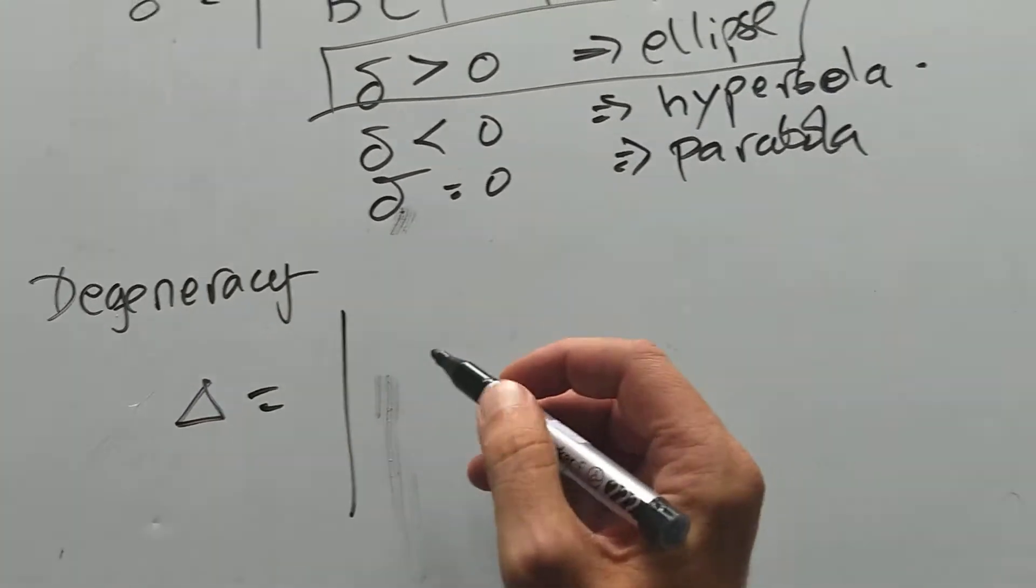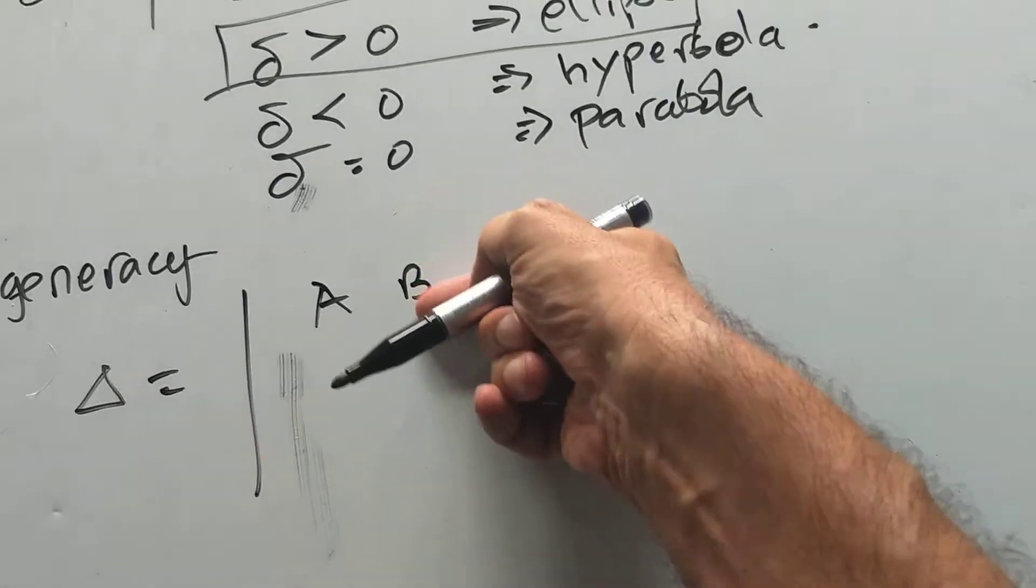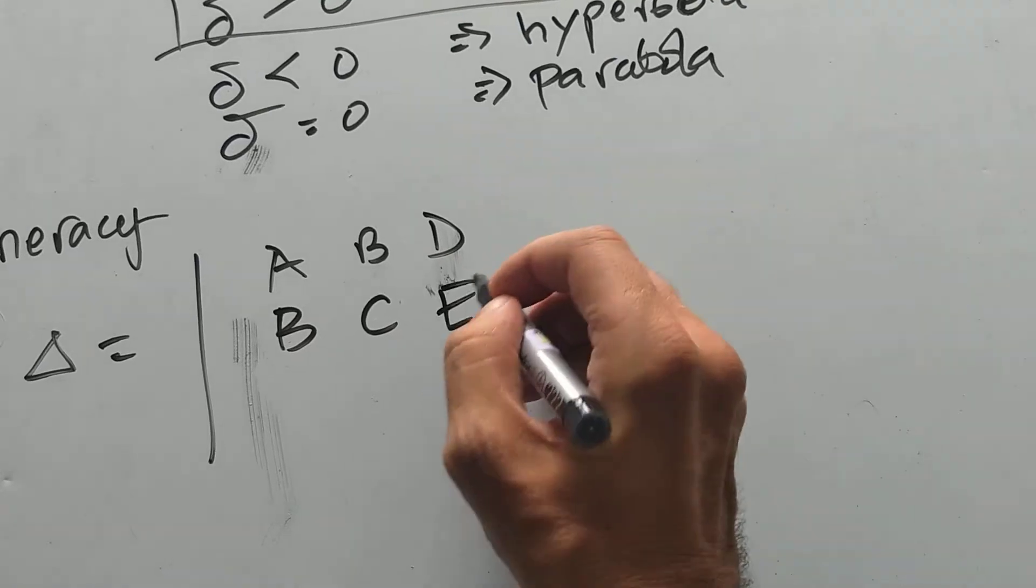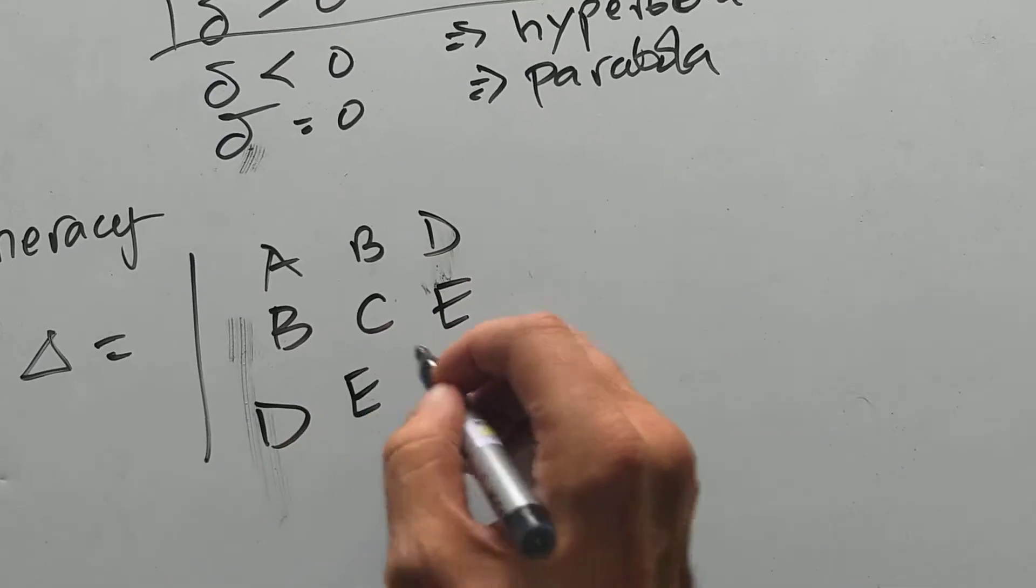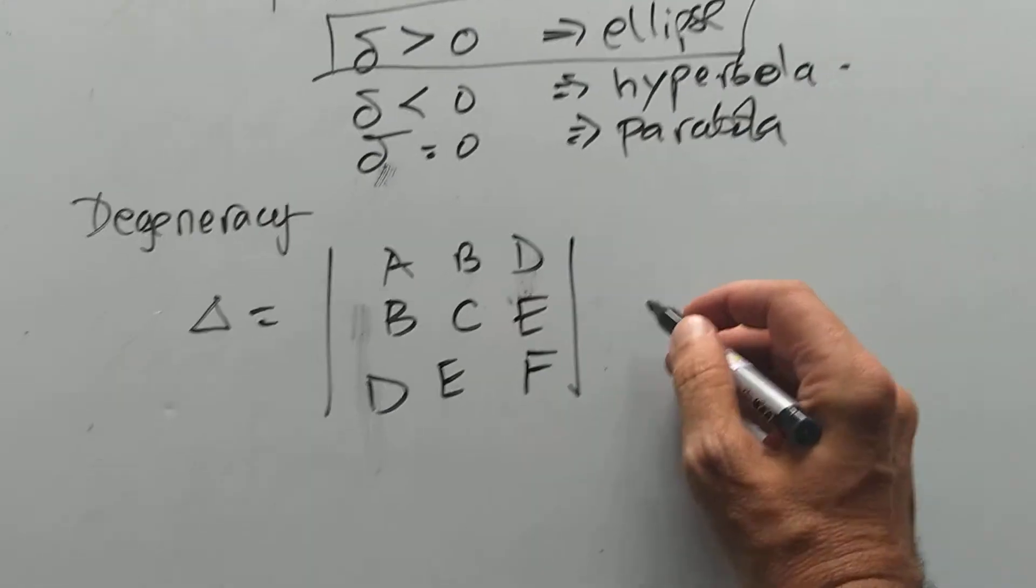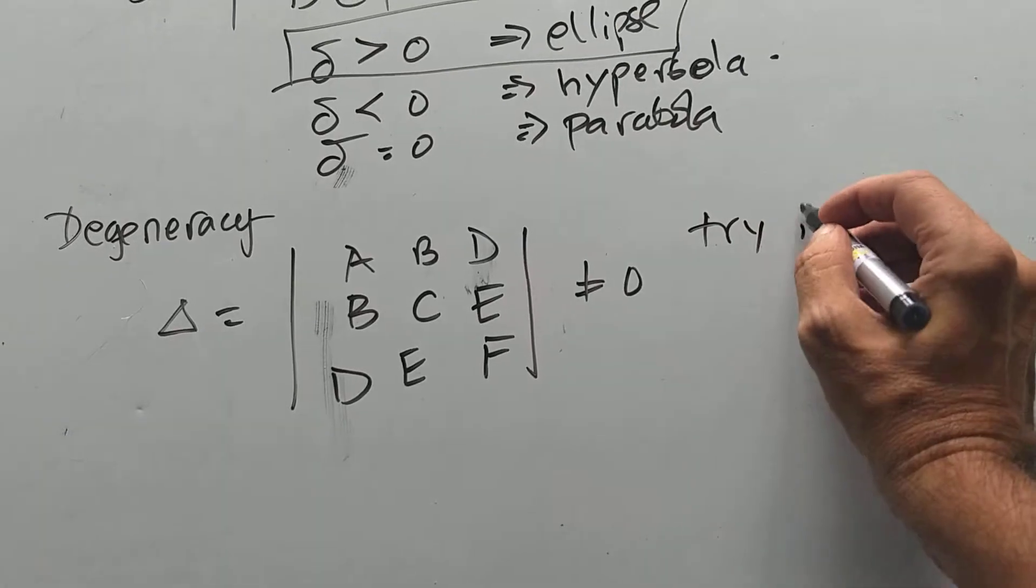Degeneracy can be checked by this big determinant: |A B D; B C E; D E F|. And when we calculate all this, we find that this is not equal to 0. You try it. Try it.